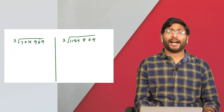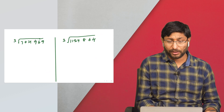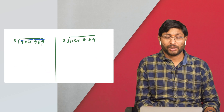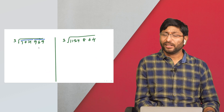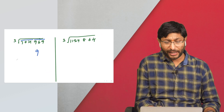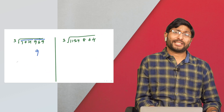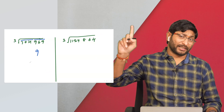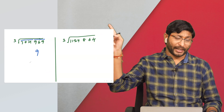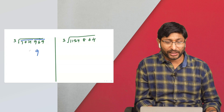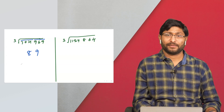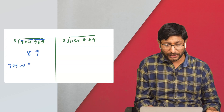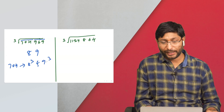Solution for cube root of 704969: split into 3 digits and 3 digits. The cube root is ending with 9, so the answer also ends with 9. Consider 704: it comes between 8³ and 9³, so the answer will be 89.